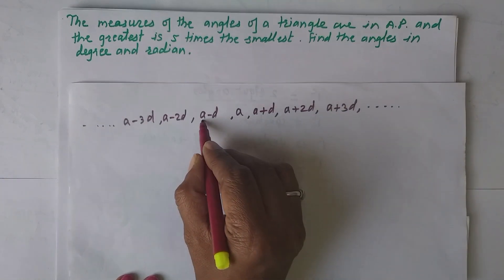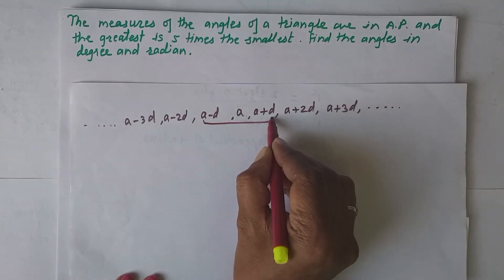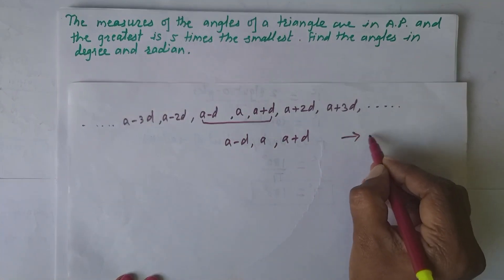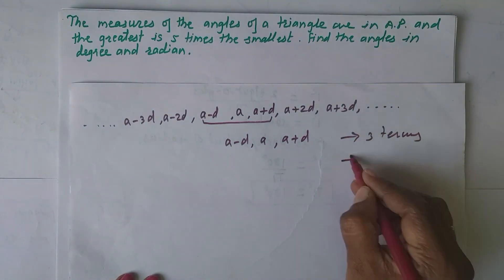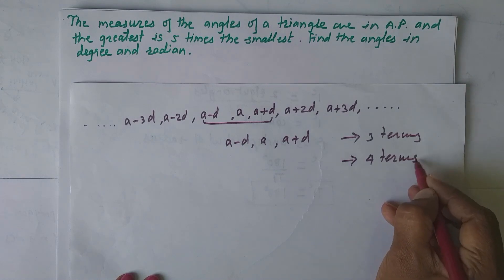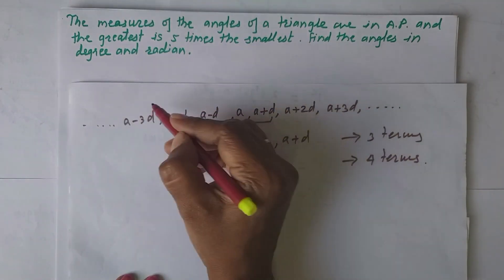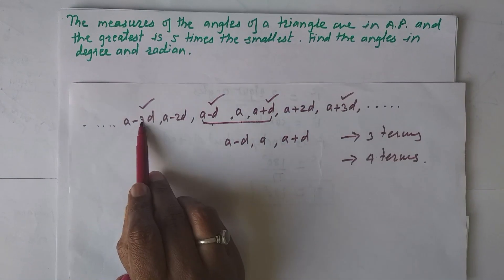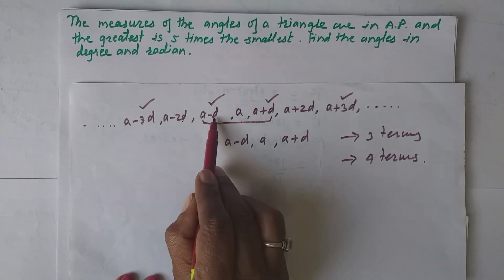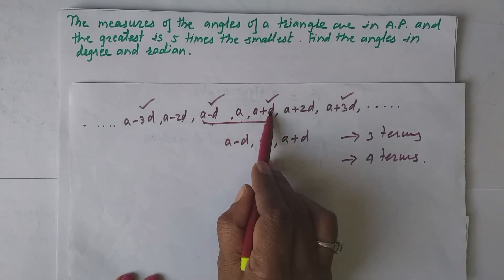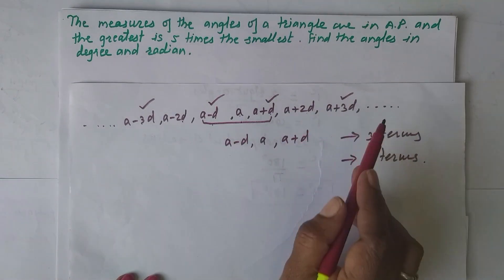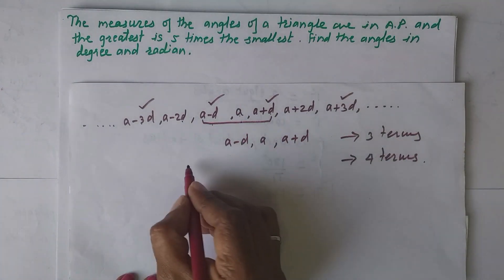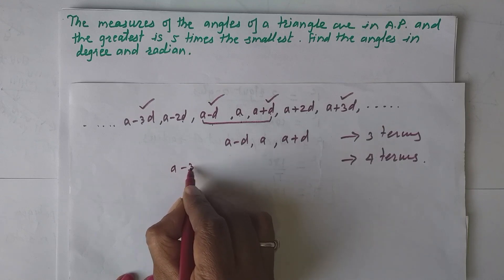If we have to find three terms in AP, we take them as a−d, a, a+d. If we have to find four terms in AP, we take alternate terms: a−3d, a−d, a+d, and a+3d.